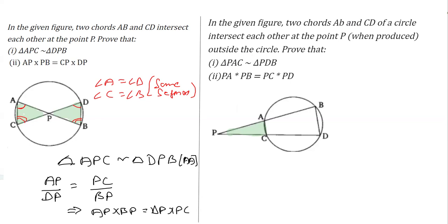Now for the second question, we use the property that the exterior angle of a triangle equals its interior opposite angle. This is derived from the cyclic quadrilateral property, which states that opposite angles of a cyclic quadrilateral are supplementary. From this, the exterior angle of a cyclic quadrilateral equals the interior opposite angle.